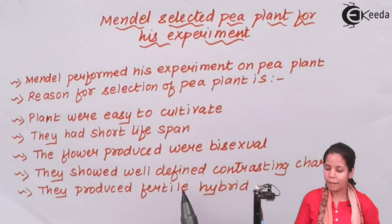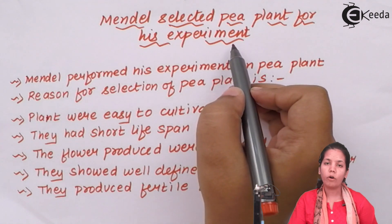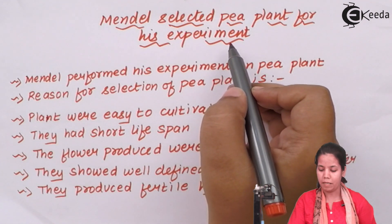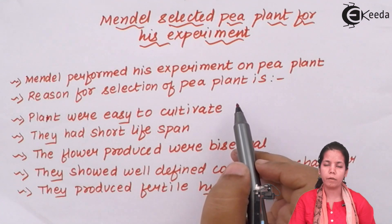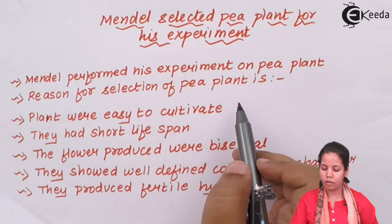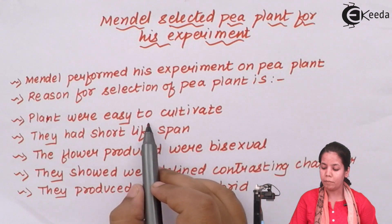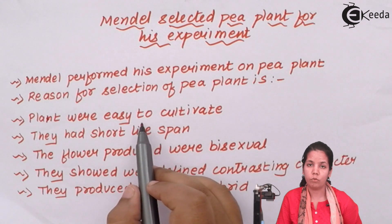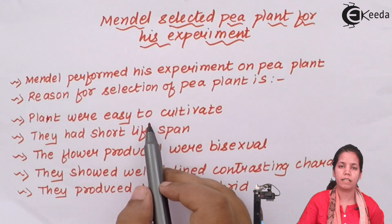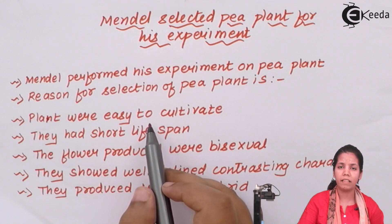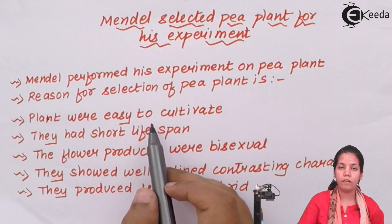Why did Mendel select Pisum sativum? He could have chosen any flowering or fruiting plant, but why the pea plant? The first important criterion was that pea plants were easy to cultivate. They were not as big as a mango tree nor as small as grasses — they had a moderate height and were easy to cultivate, and could even be grown in the region where Mendel stayed.